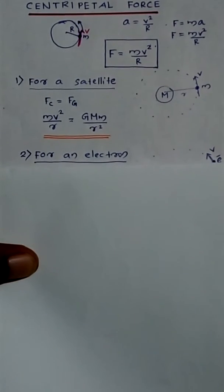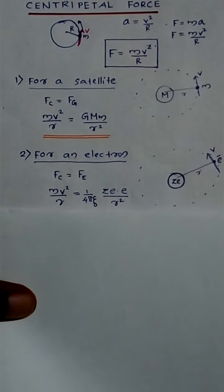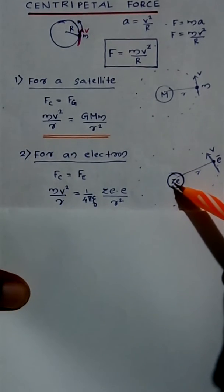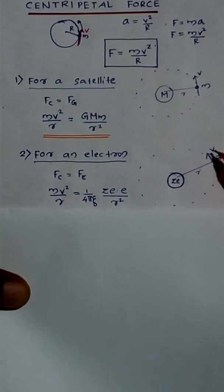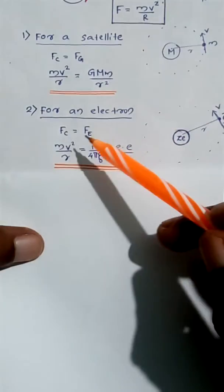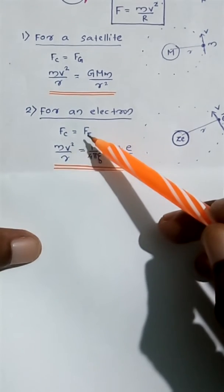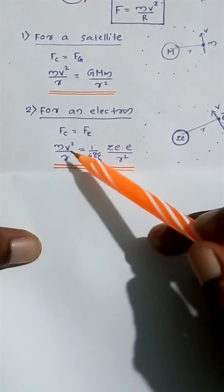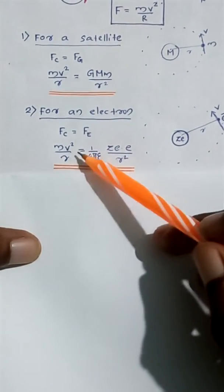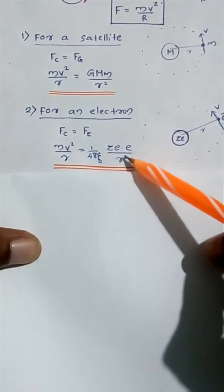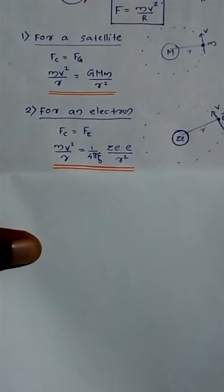Now consider the case of a revolving electron. The electron revolves around the nucleus, which has a charge Ze, where Z is the atomic number. The electron revolves with velocity v through an orbit of radius r. Here, the necessary centripetal force is provided by Coulomb's electrostatic force, so mv²/r = (1/4πε₀) · Ze · e / r².